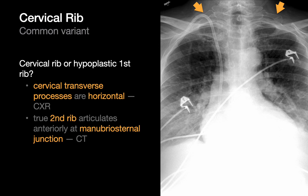A common mimic when diagnosing cervical ribs are hypoplastic first ribs coming off of the T1 vertebra, since they'll often look a little unusual and cervical rib-ish. A helpful tip for telling a cervical rib apart from a hypoplastic first rib on chest x-ray is to look at the transverse process that rib is articulating with. The transverse processes of thoracic vertebral bodies tend to point upwards, while the transverse processes of cervical vertebral bodies generally point more horizontally.